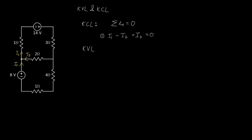Now we're going to apply KVL. KVL around the top loop will give us the following equation. Sum of the voltage drops is equal to zero.